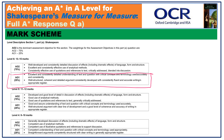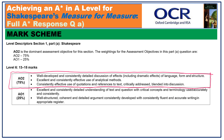A brief reminder of the mark scheme. AO1 determines your band and rewards quality of argument, writing, and understanding of text and task. However, even more importantly, at least in terms of the percentages, AO2 is about your insight into language, form and structure, your use of quotations, and your understanding of how Shakespeare creates dramatic effects in relation to the audience.